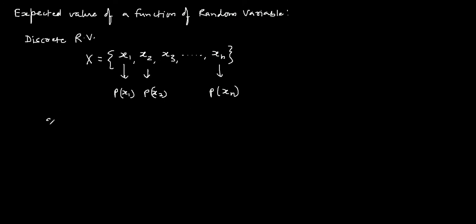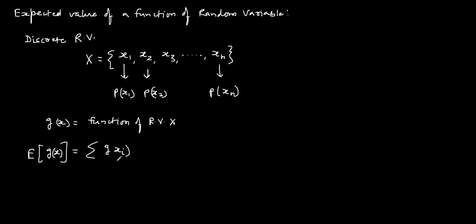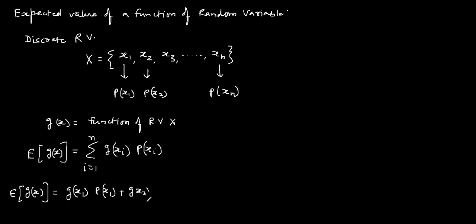Now suppose g is a function of random variable x. Then the expected value of this function g for a discrete random variable x is the summation of g(xi) times p(xi), where i changes from 1 to n, because the random variable x has n values. Expanding this summation: g(x1)·p(x1) + g(x2)·p(x2) + ... + g(xn)·p(xn). Using this formula, we can find the expected value of a function of a discrete random variable.